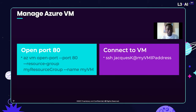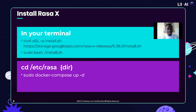To install Azure X, make sure that in your terminal you type these commands, specifically in the directory that contains your Azure resource files.